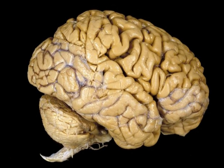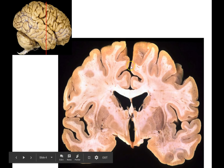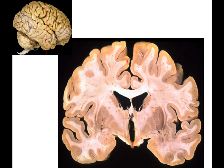If we were to take your brain and slice it like this, you would see something like this on the lower right-hand corner. This is a section of the brain and you can see there are different colors of tissue. There's this darker stuff around the edge, and lighter stuff in the middle. We'll talk more about those a little bit later.